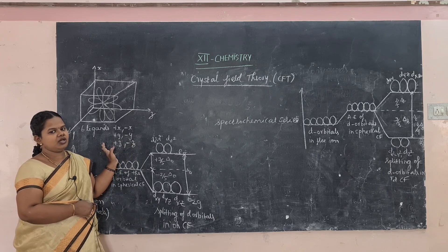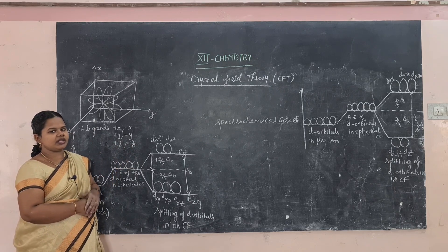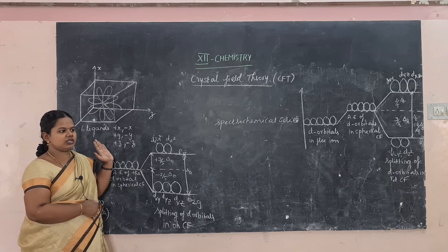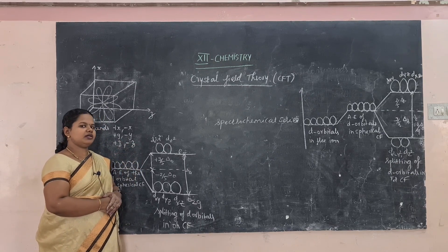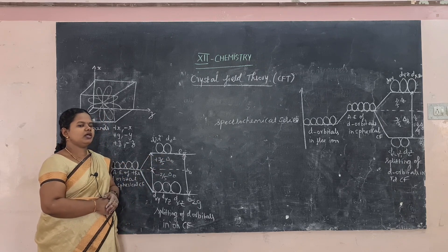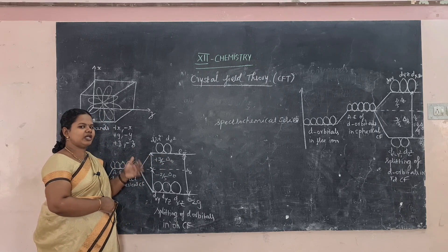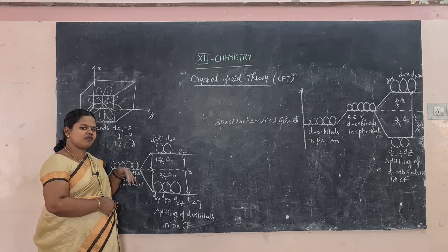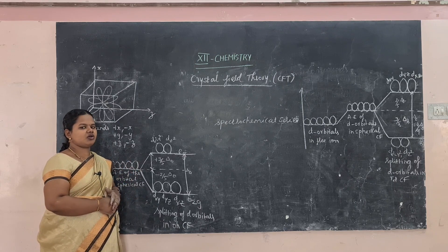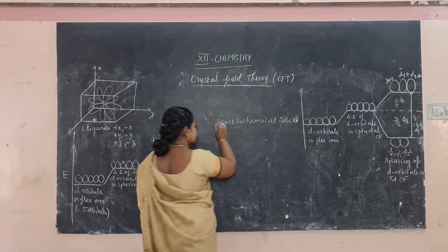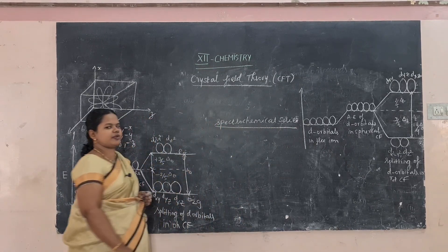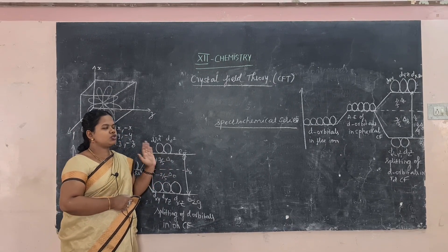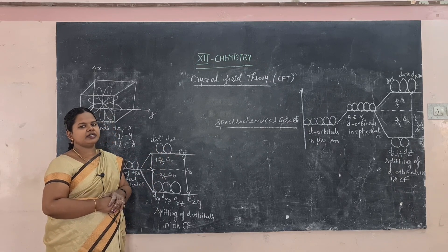Crystal Field Theory explains all the limitations present in Valence Bond Theory. In the next video we'll see Molecular Orbital Theory. Crystal Field Theory and Valence Bond Theory are very important for 11th and 12th standard. Based on the spectrochemical series, the splitting will differ — strong field ligands cause more splitting, weak field ligands cause less splitting.